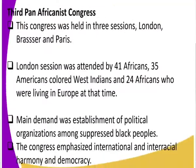Then we have the third conference, which was held in London, Brussels, and Paris — three sessions. The London session was attended by 41 Africans and 35 Americans. You can see that Africans were in a larger number in these conferences because Pan-Africanism was about uniting people of African origin. We also had 24 West Indians who were living in Europe at that time.